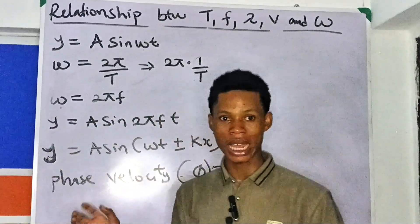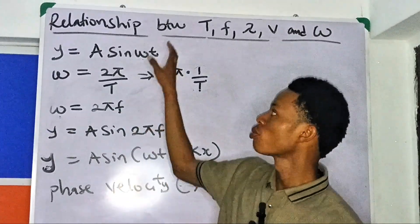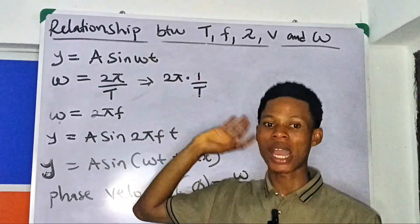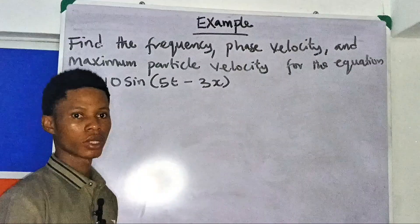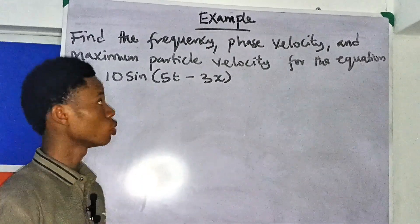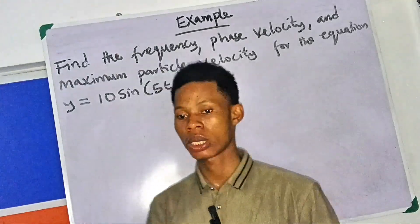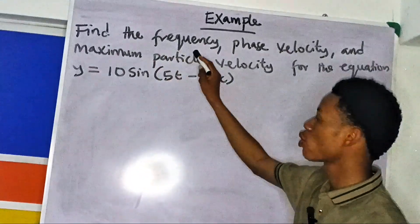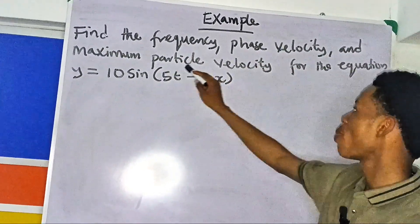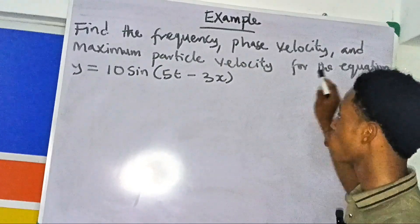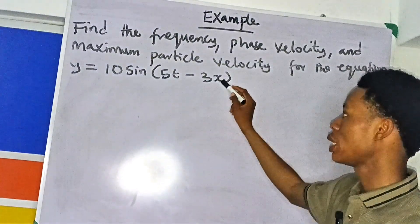I will now give a practical question to explain everything I have been saying. Find the frequency, phase velocity, and maximum particle velocity for the equation: y = 10 sin(5t − 3x).